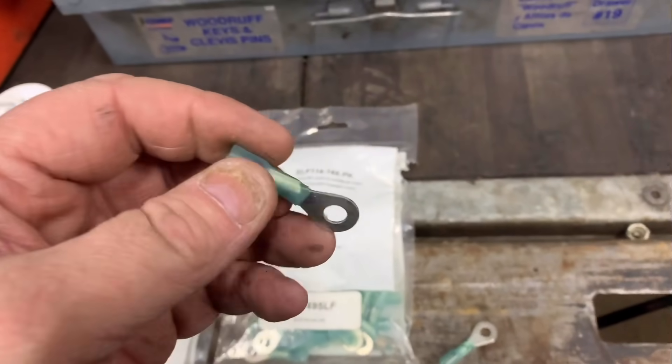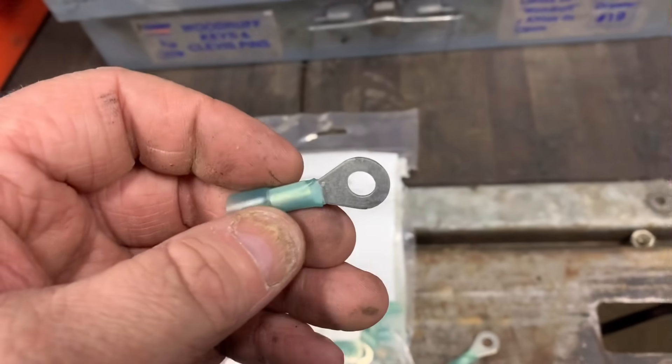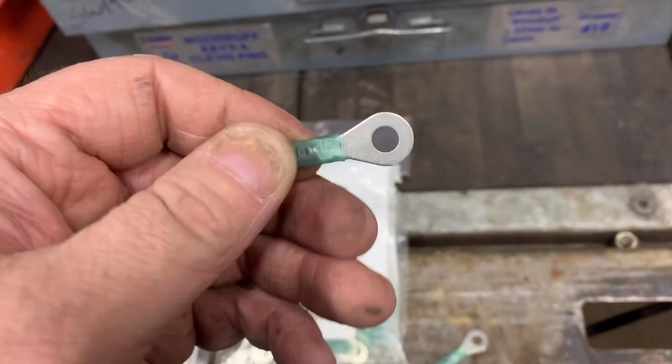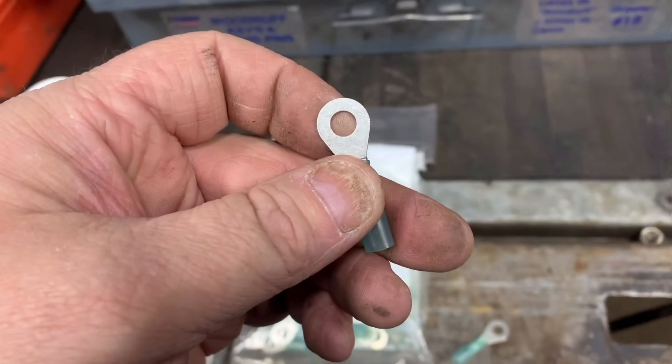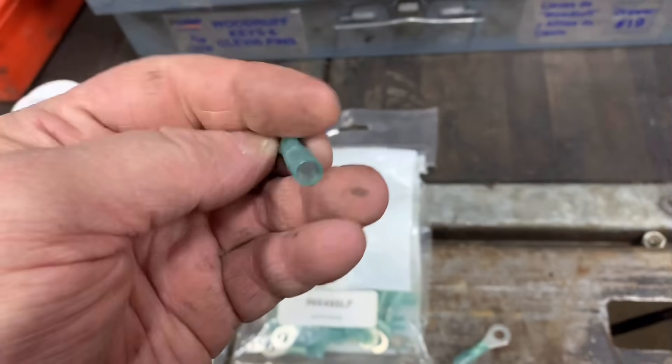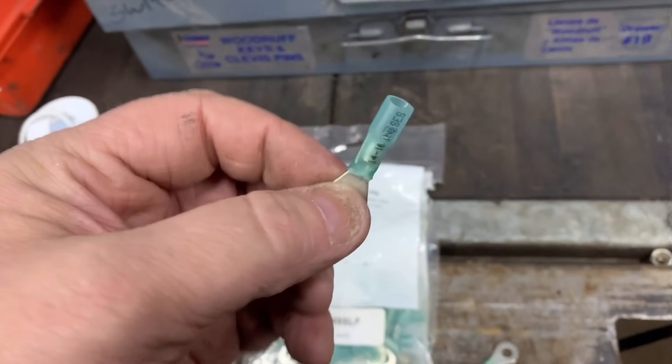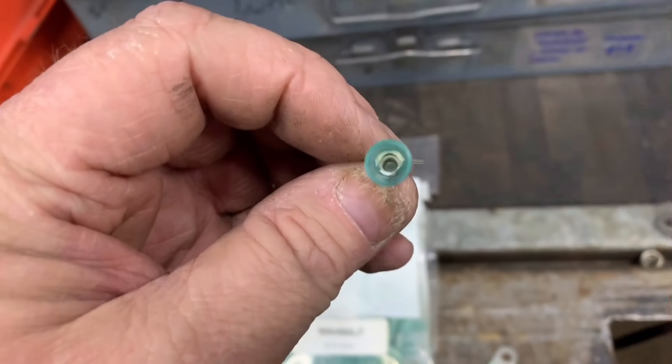I want to show you guys some of the wiring connectors that I'll be using. As you can tell, this is the quarter inch spade connector with the shrink tubing and solder in one.